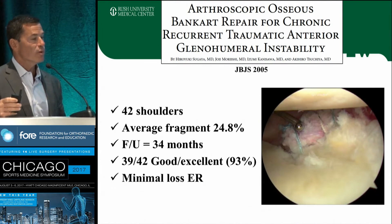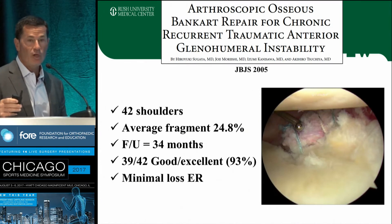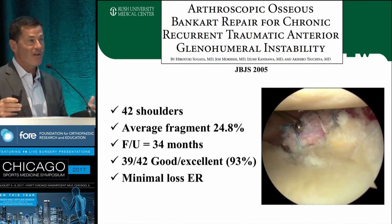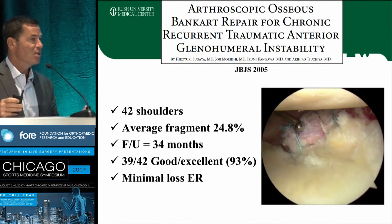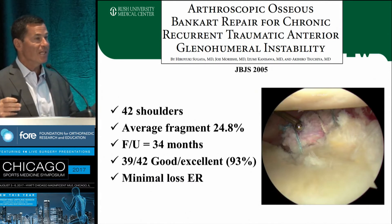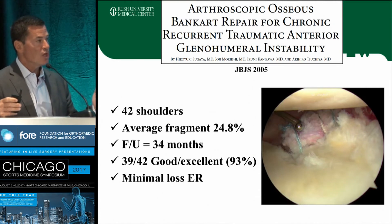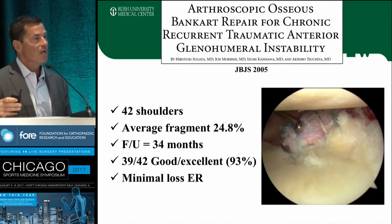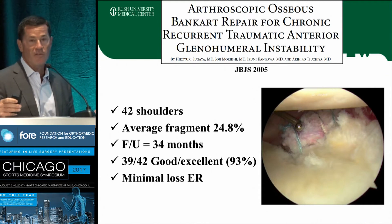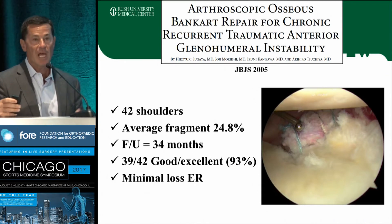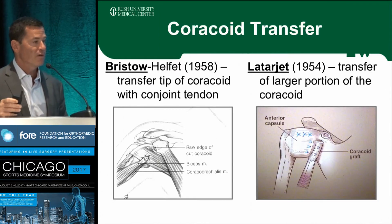If you have an acute injury with a bony fragment, the literature is very good. If we get that bony fragment back — even when it's fragmented in multiple pieces — you can actually get the patient to a successful outcome with an acute dislocation with a bony fragment repaired arthroscopically. If all else fails and you have to open it, that's fine — just restore the anatomy. That's our objective.